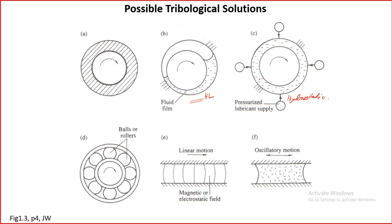In both hydrodynamic and hydrostatic cases, a fluid film is formed — the film basically separates the two surfaces, so there is no contact between the surfaces and we expect the wear to be nearly zero. But actually it doesn't happen; the wear is not zero for either case, and the reason is that contacts do happen under different situations.